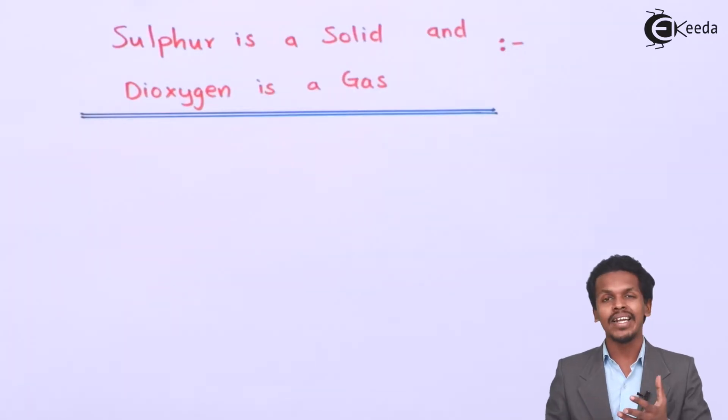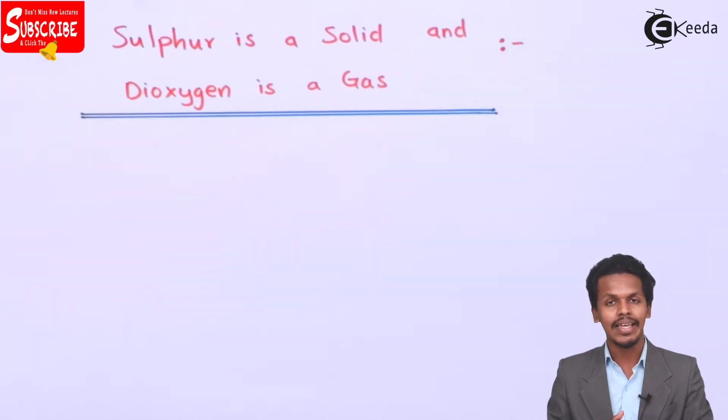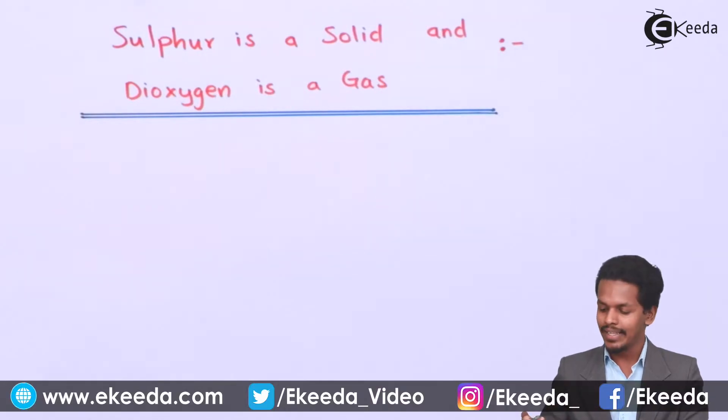In this topic we're going to discuss why dioxygen is basically in gaseous form while sulfur is in solid form structure. This is what I'm going to talk about, and I'll start with oxygen first.